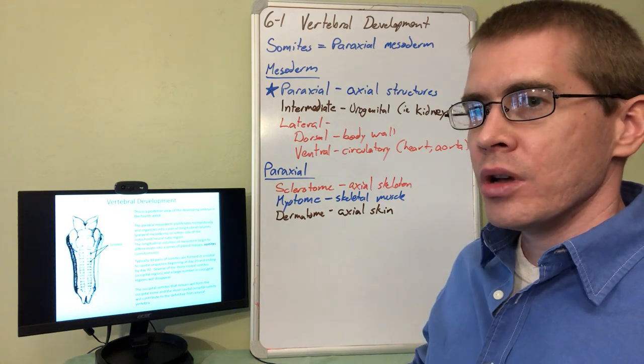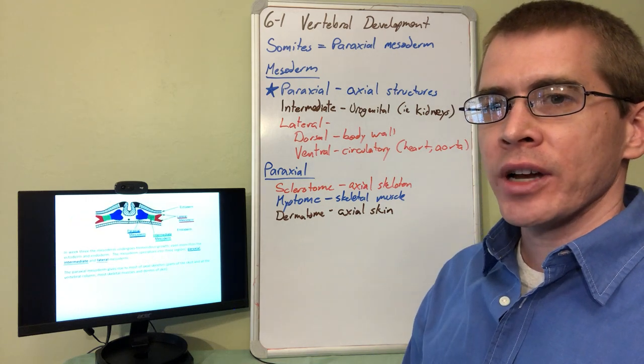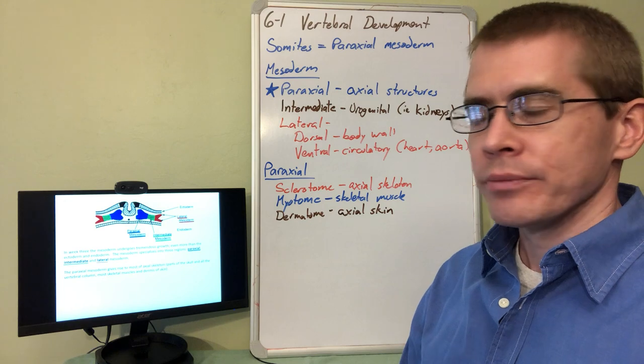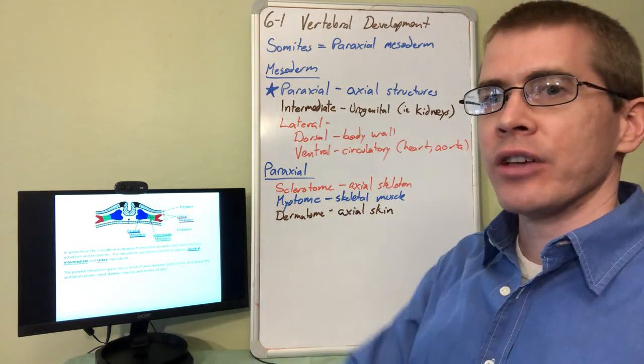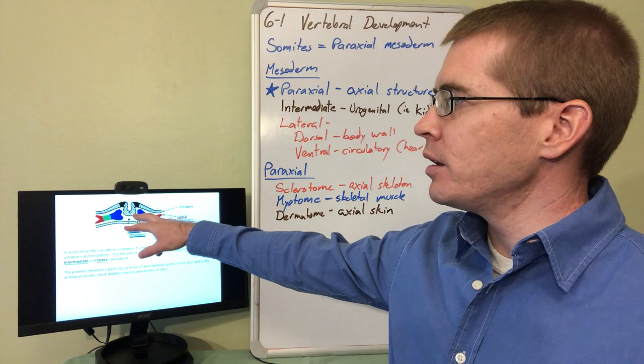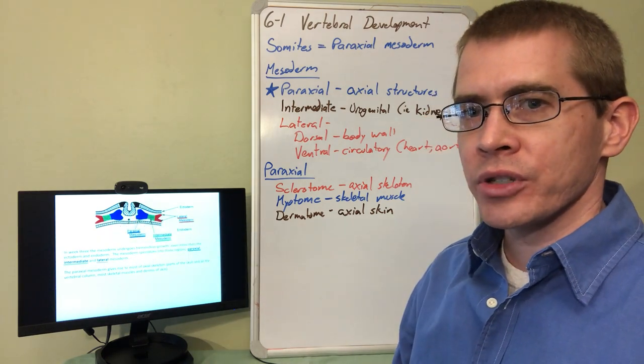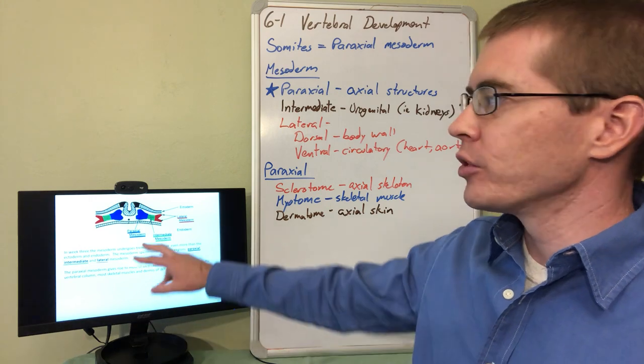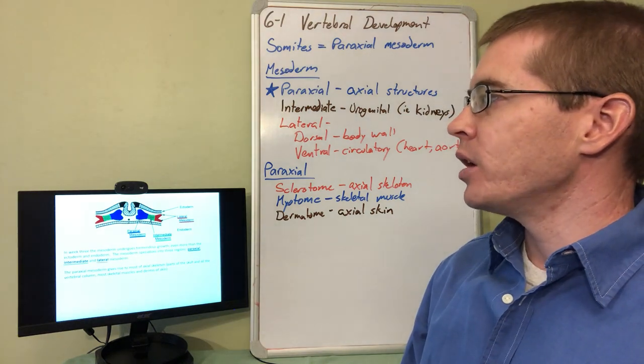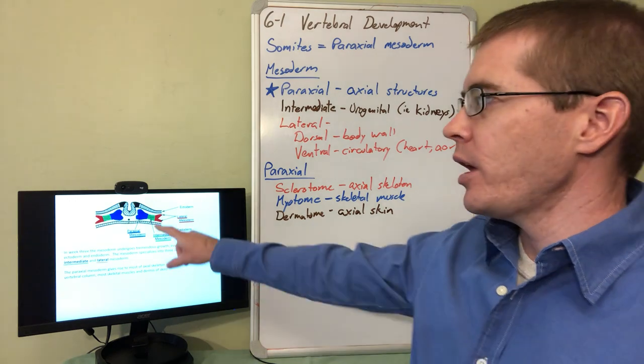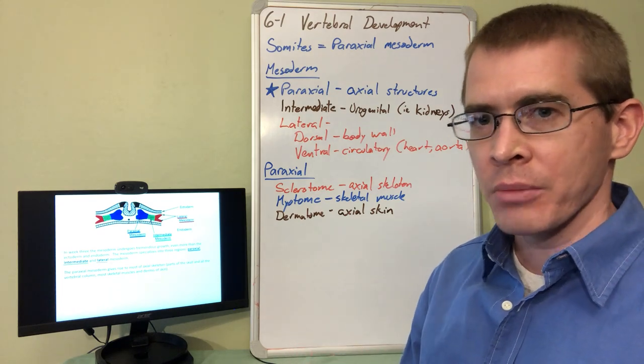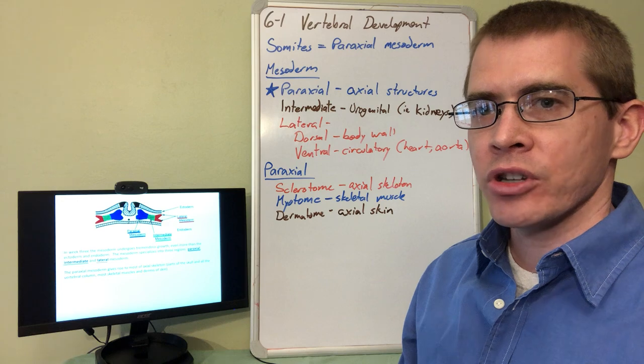Looking at these structures, we can see the somites are the result of the paraxial mesoderm forming around the notochord. During gastrulation, we created this middle layer—the mesoderm—and the notochord has formed from some of that mesoderm. The notochord produces signals to create the neural groove and neural tube. On either side of the neural tube, we have a bulge of mesoderm called the paraxial mesoderm. The tissue that makes up the somite is paraxial mesoderm, but the bump on the exterior of the embryo is called a somite.